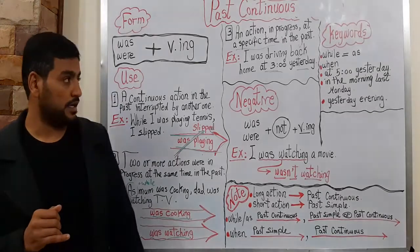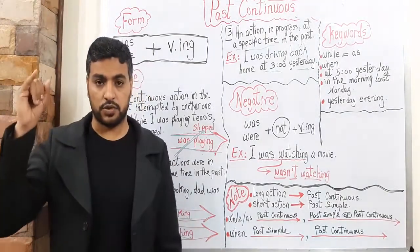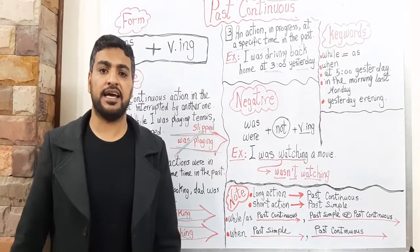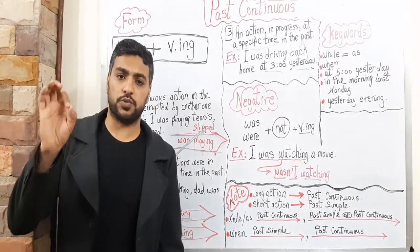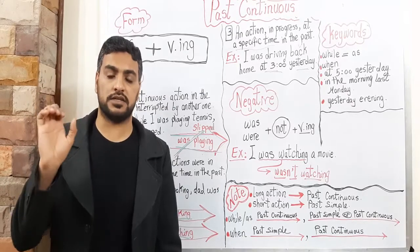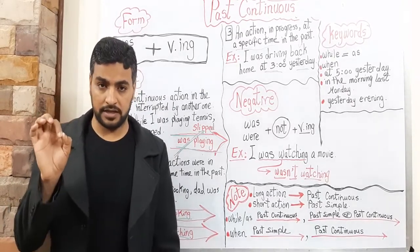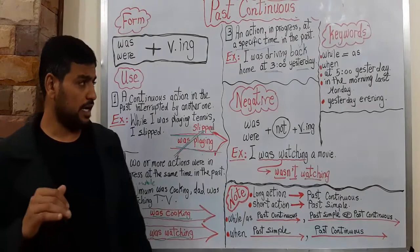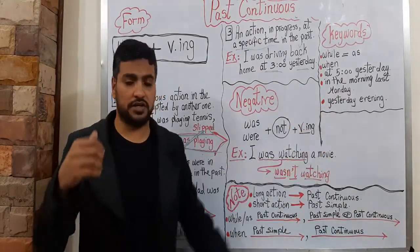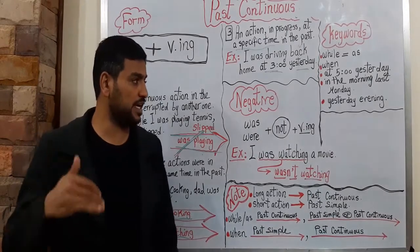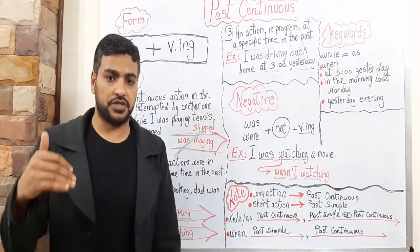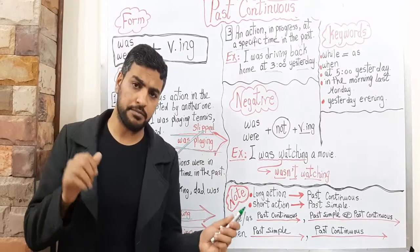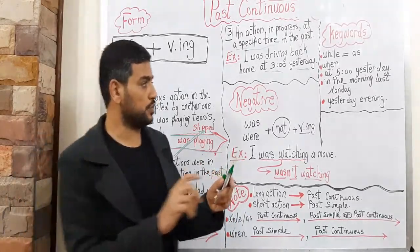What about the keywords? While, as, and when. After 'while' we put a long action — Past Continuous. After 'when' we put Past Simple, and then later Past Continuous. Other keywords include: at five o'clock yesterday, in the morning, last Monday, yesterday evening, yesterday morning, afternoon. The most important thing is that we have a specific time in the past.